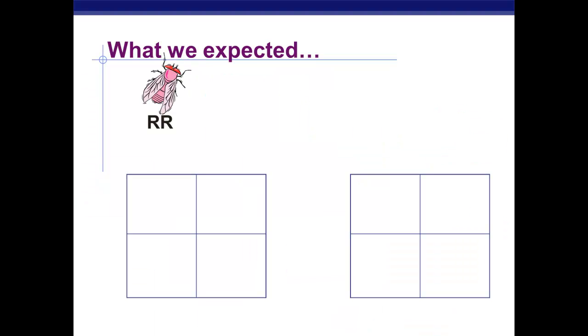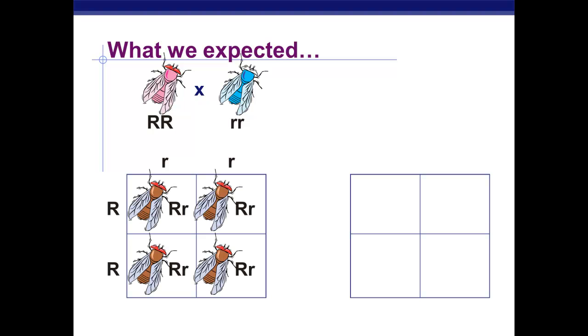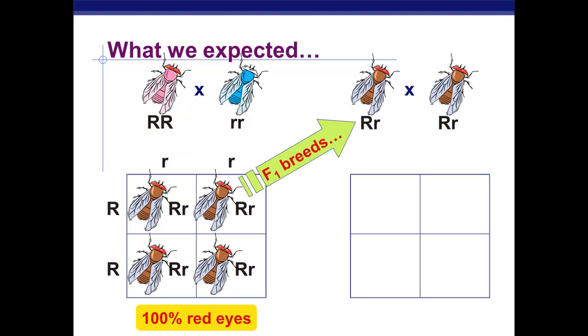Now, what he expected was our normal dominant recessive relationship. So, if we had two big R's, the normal dominant red eyes, and two little r's, the white eyes, we would expect in the F1 generation that all the flies would have red eyes. And then, after that generation bred in the F2,